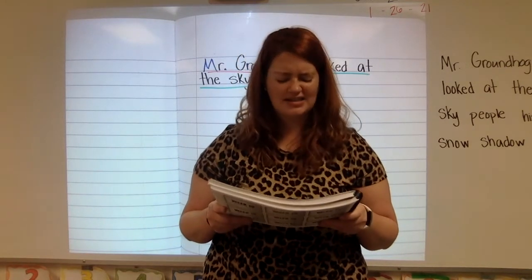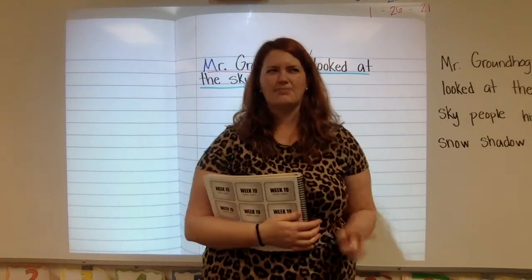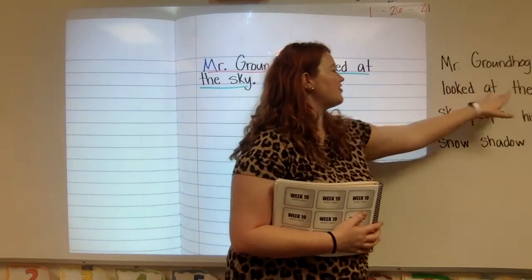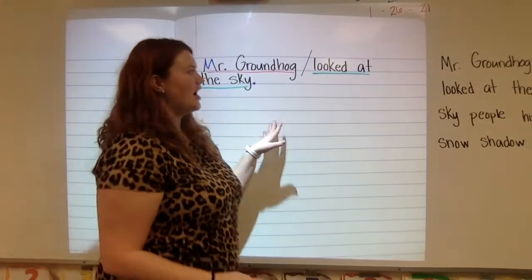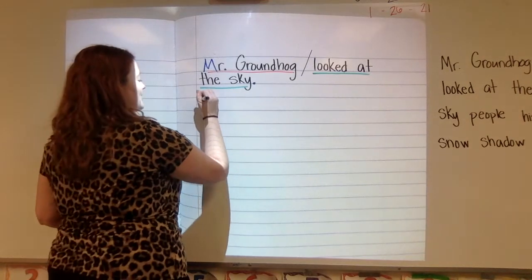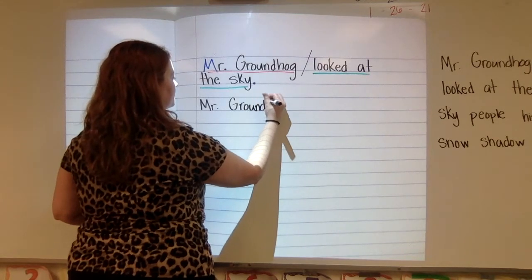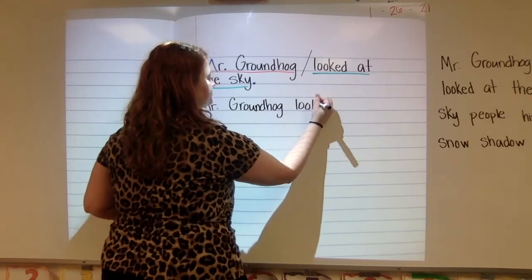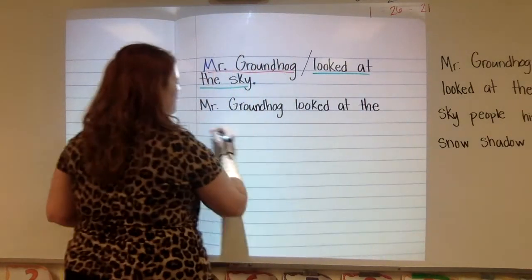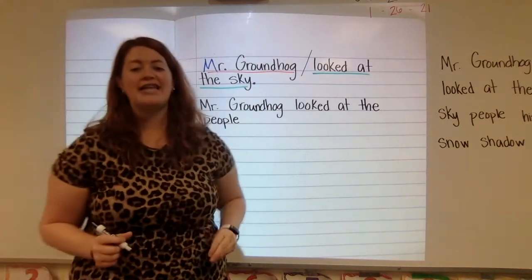What did he look at? He was looking at the men, women, and children. I don't have the words men, women, and children, but wait — I have the word people. Could I say, Mr. Groundhog looked at the people? Perfect. I'm going to add that to my notebook, on the same page I was on yesterday. Mr. Groundhog looked at the... people won't fit here, so I'm just going to bring it down. And that is totally okay. Mr. Groundhog looked at the people.